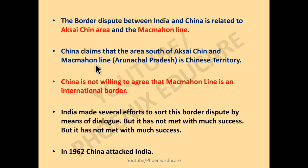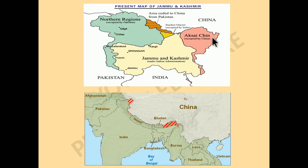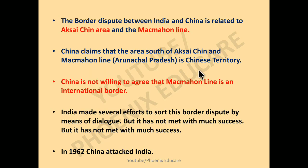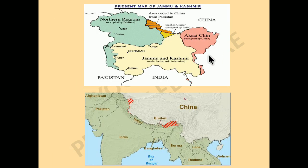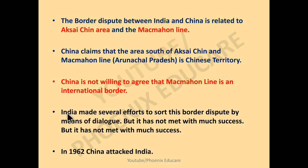China claims the Aksai Chin region as its territory, while India claims it as Indian territory. China is not willing to agree that the McMahon Line is the international border. India has made several efforts to sort these border disputes through dialogues, but the disputes between India and China have not been resolved. In 1962, India fought a war with China, and in that war India lost.